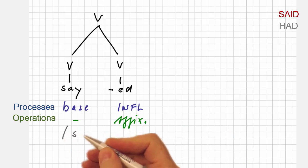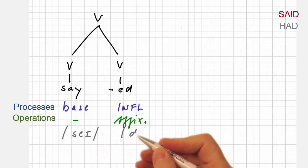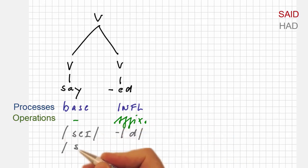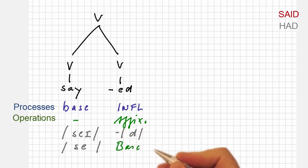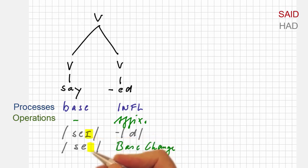In looking at the phonological code, however, we can observe a base change in say, where the vowel changes from ay to a. Thus, we have two operations at work here: affixation plus base change.